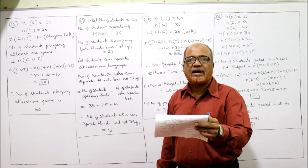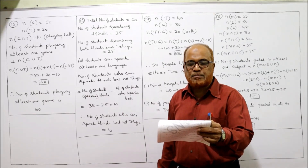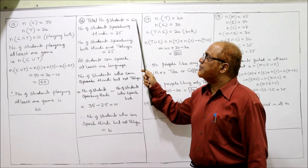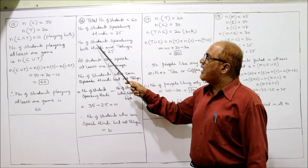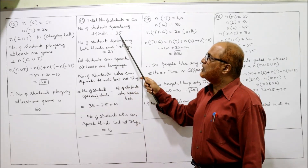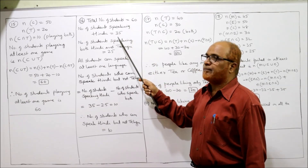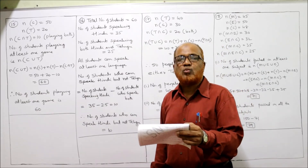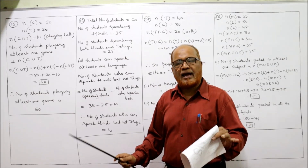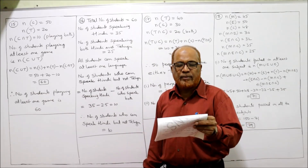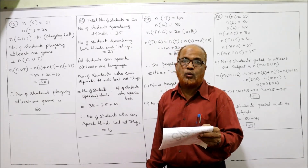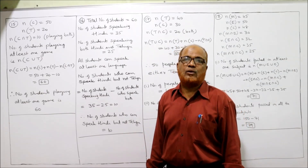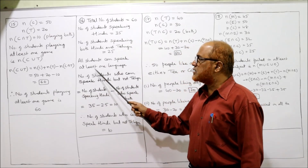Problem 16: In a group of 60 students, 35 can speak Hindi, while 25 can speak both Hindi and Telugu. Total students in the class is 60, number of students speaking Hindi is 35, and number of students speaking both Hindi and Telugu is 25. All students can speak at least one language. The question asks: how many students can speak Hindi but not Telugu?